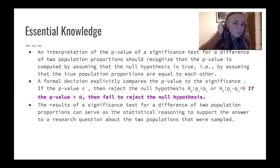If the P value is greater than alpha, then remember, we fail to reject. We don't say we accept it as true. We just fail to reject it.